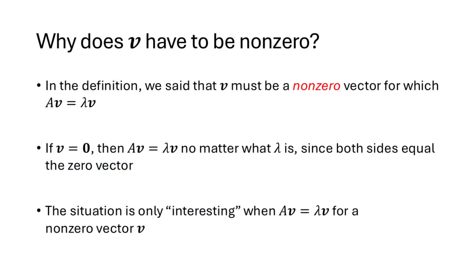One thing you might have noticed from the definition of eigenvector is that the vector has to be non-zero. If V is the zero vector, then A times V will be the zero vector and lambda times V will be the zero vector no matter what lambda is. So if we allowed the zero vector to be an eigenvector, every value would be an eigenvalue, which isn't very interesting. To make this definition meaningful, we exclude the zero vector.